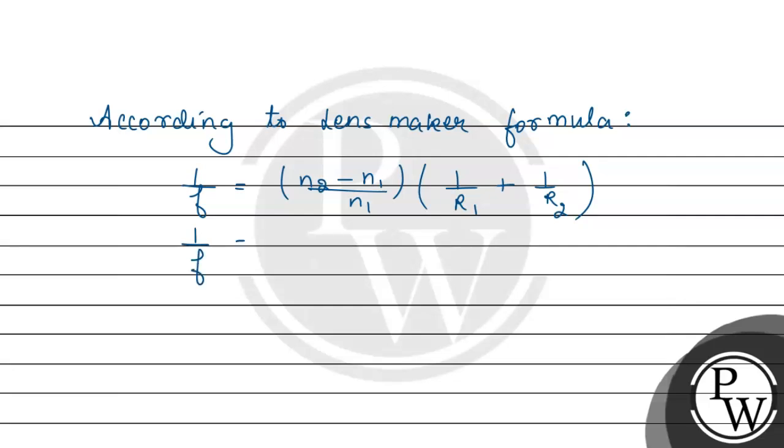So, 1 by F will be equal to N2 minus N1 divided by N1 into 1 by R. Since both radii are equal, 1 by F equals N2 minus N1 divided by N1 into 2 by R.